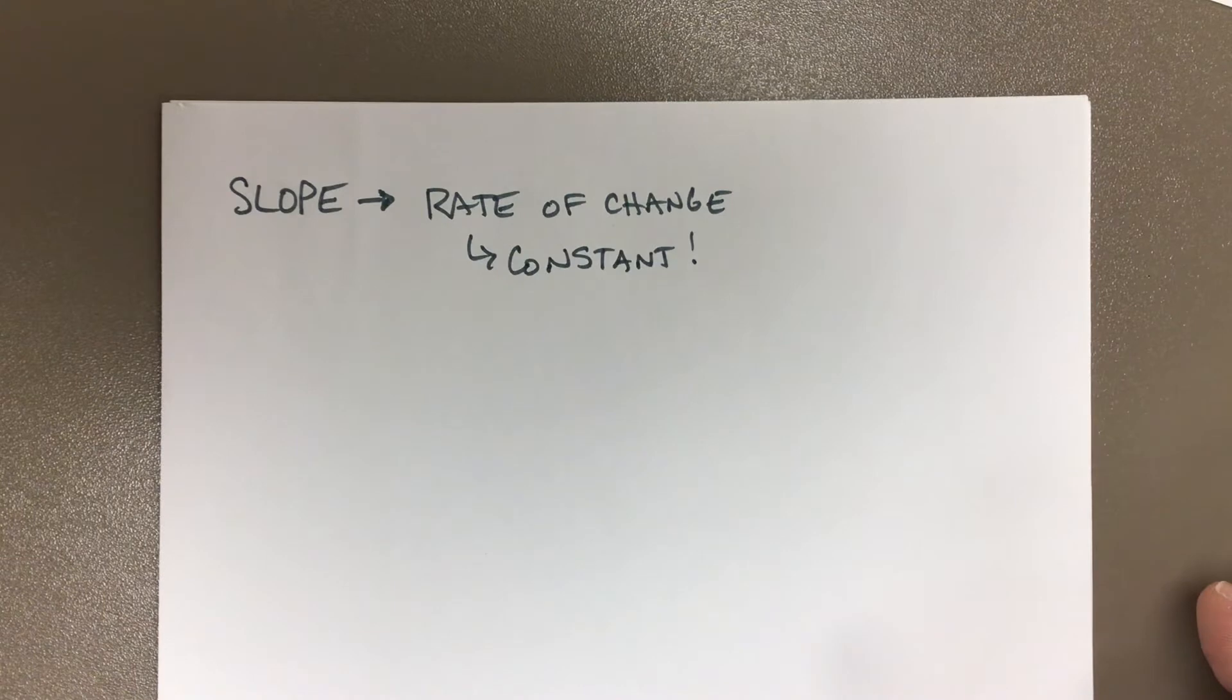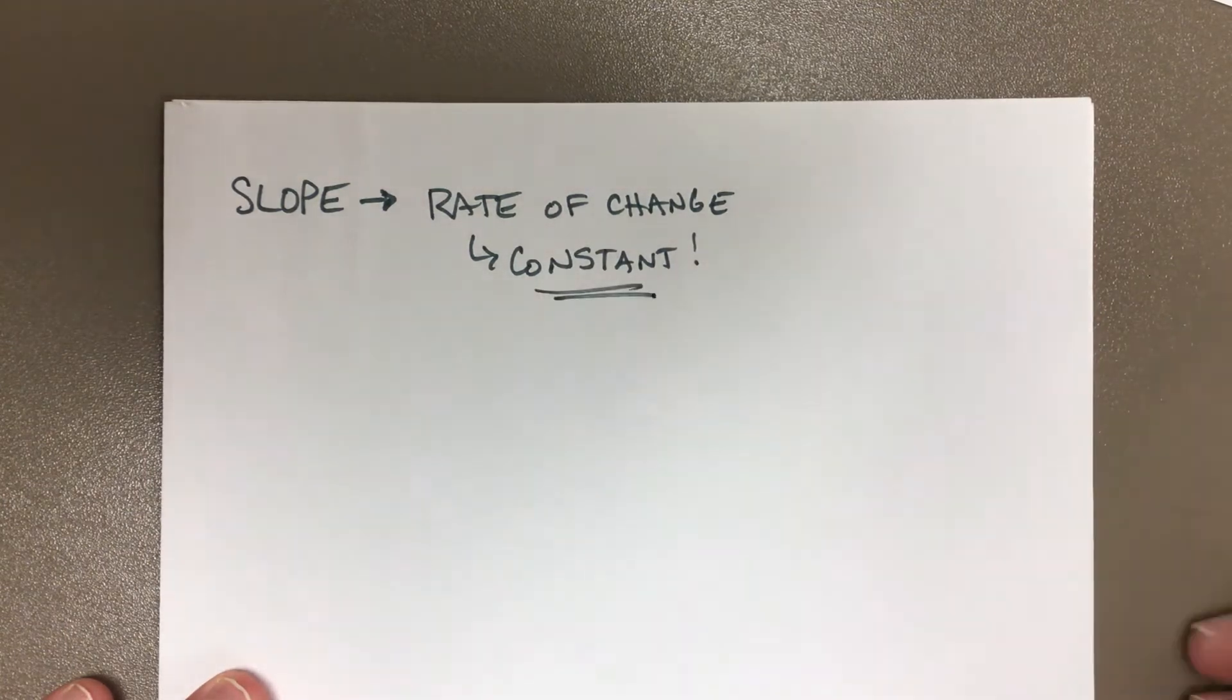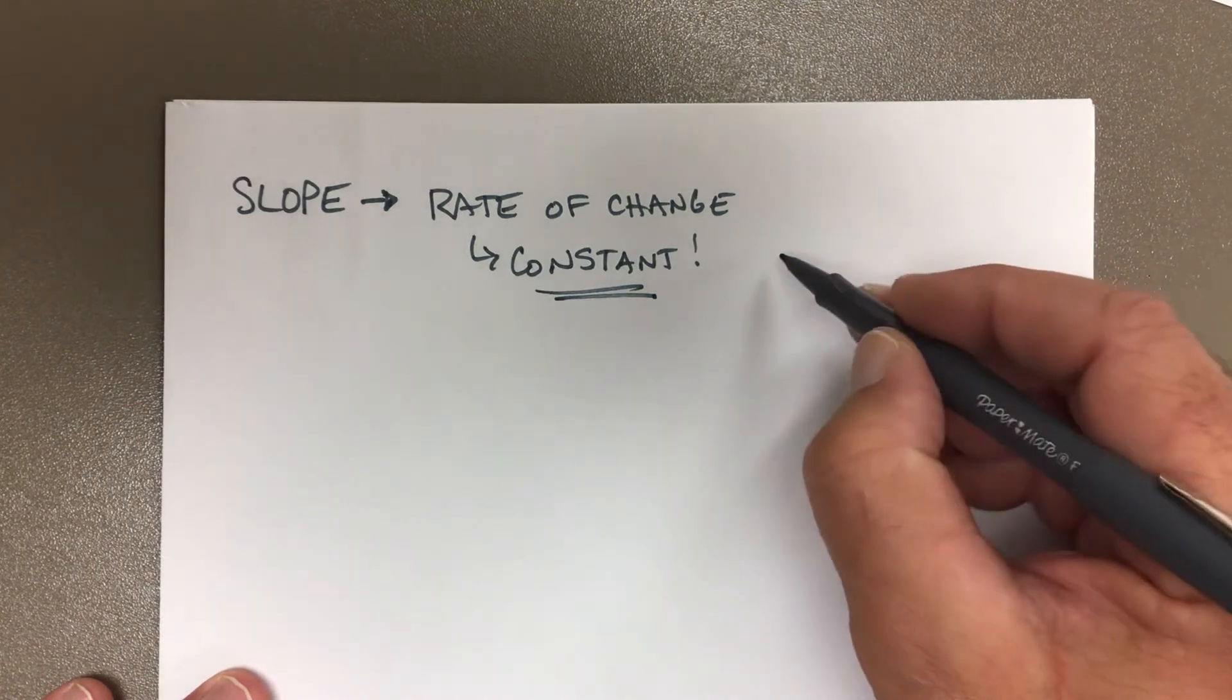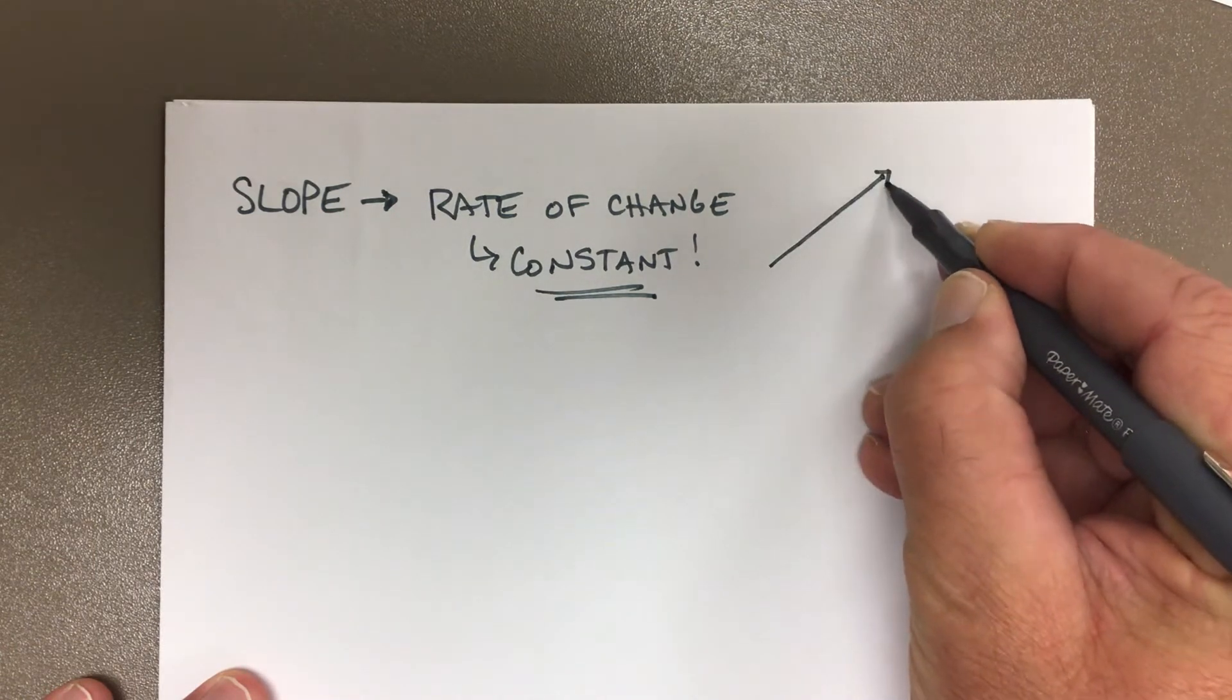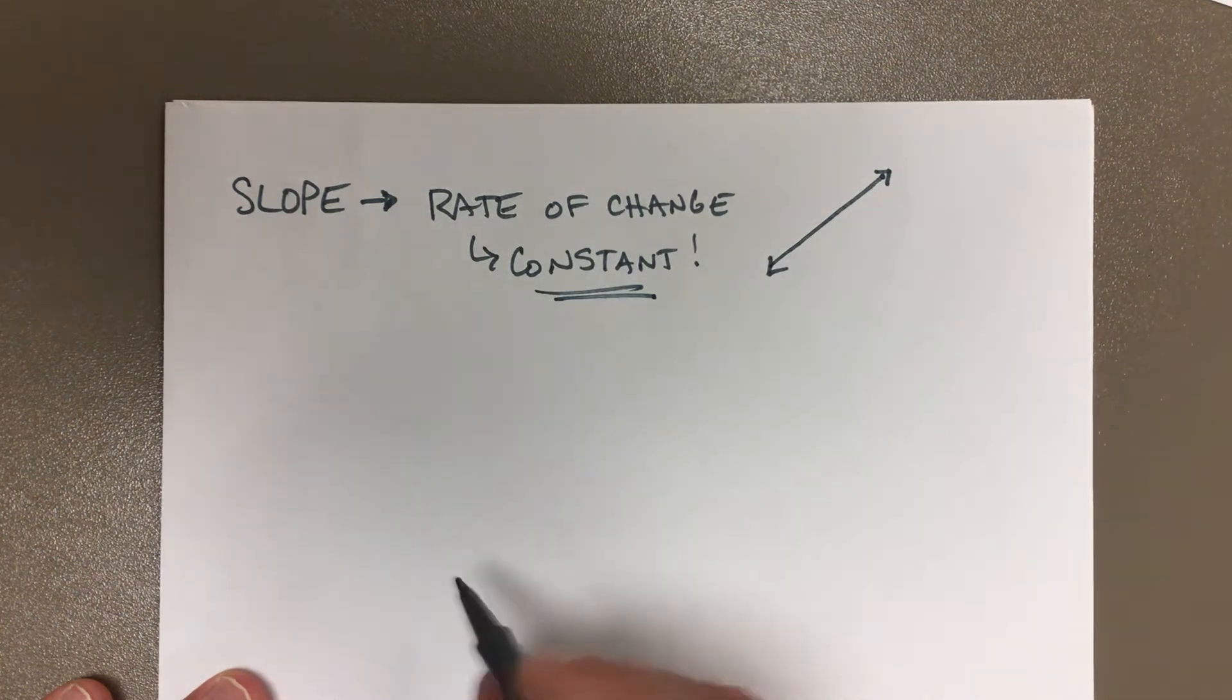that no matter what, no matter which two points on that line, they're going to be moving at the same change, no matter where on that line. If it's a constant rate of change, that means it is a straight line—that's what it means.